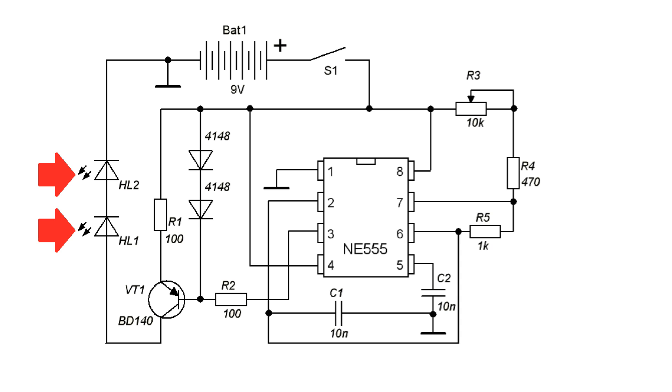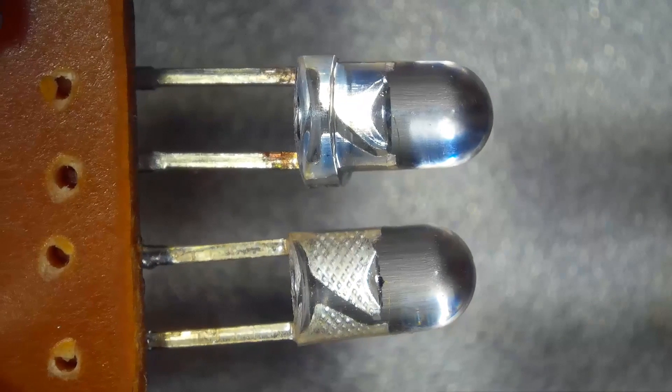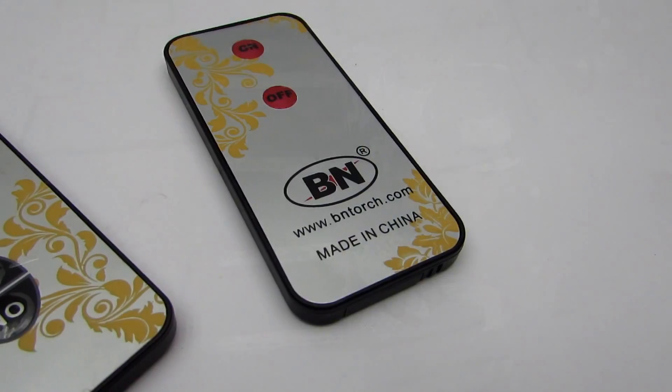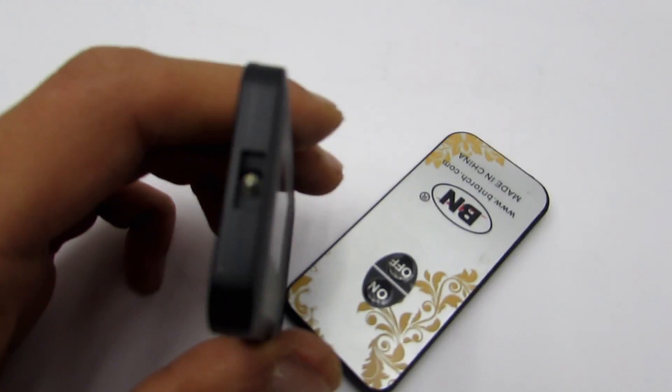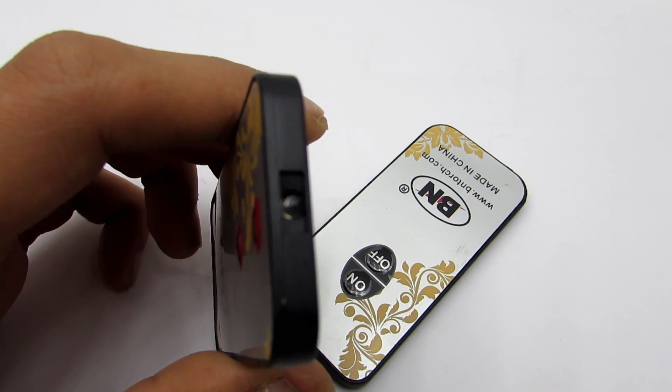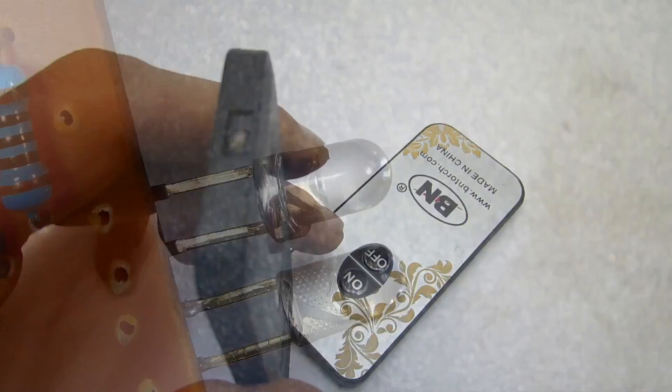A pair of infrared LEDs is connected in series in the collector circuit. I took them from a remote control for cheap Chinese lamps. Ideally, the wavelength of these LEDs should correspond to the wavelengths of the LEDs in the remote control unit that you want to silence.